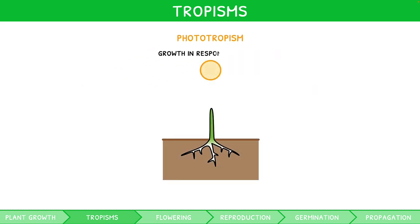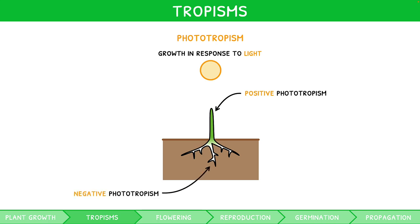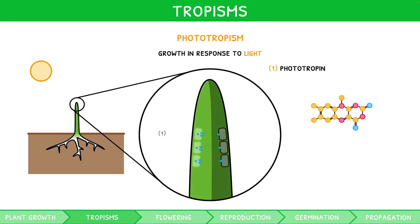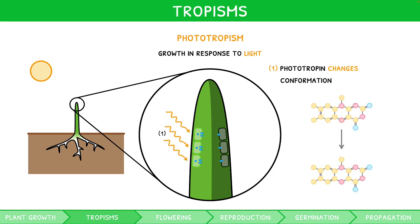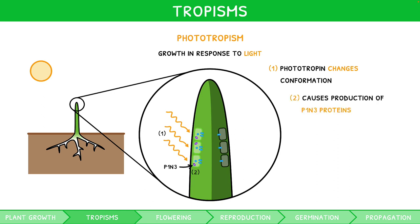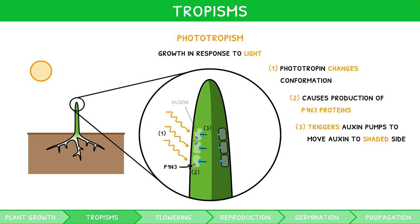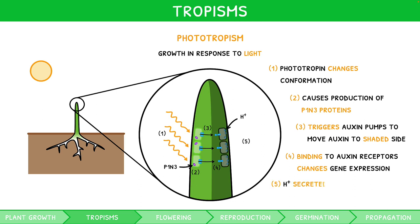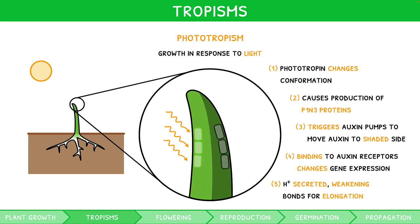Phototropism is the response in growth of a plant to light. All shoots grow towards light, known as positive phototropism, whilst all roots grow away, known as negative phototropism. The process relies on a protein called phototropin, found in the tip of a shoot, which changes conformation in response to light. This allows it to bind to regulators of gene expression and transcription of PIN3 proteins. These PIN3 proteins trigger auxin pumps to move auxins to the shaded side of the shoot, creating a high concentration. Here, auxin binds to auxin receptors and causes a change in gene expression. These cells then secrete H+ ions into the cell walls, weakening the bonds to allow elongation, causing the shaded side to bend so the plant faces the light.